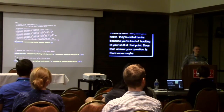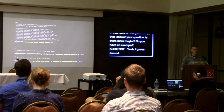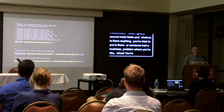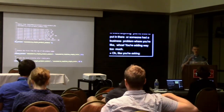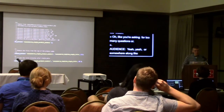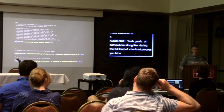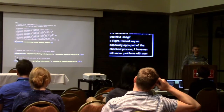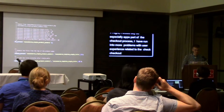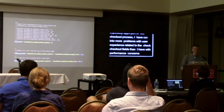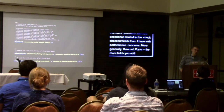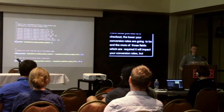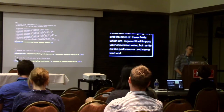A follow-up example: around meta fields — is there anything where someone was adding way too much? Especially with the checkout process, I've run into more problems with user experience related to checkout fields than with performance concerns. The more fields you add to a checkout, the lower your conversion rates are going to be, and the more of those fields that are required, the more it will impact conversion rates. As far as performance and server load, I haven't personally experienced any issues there.